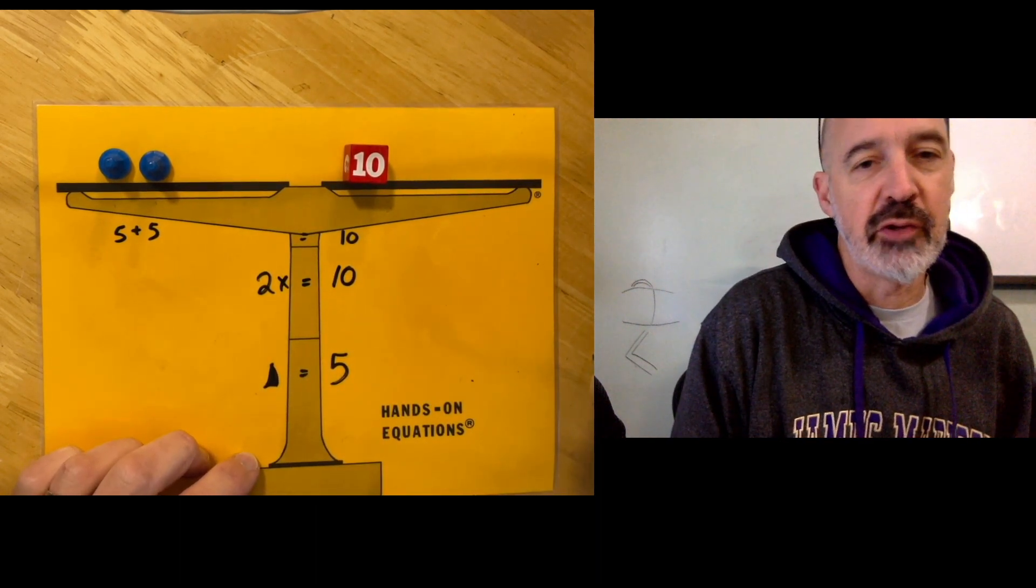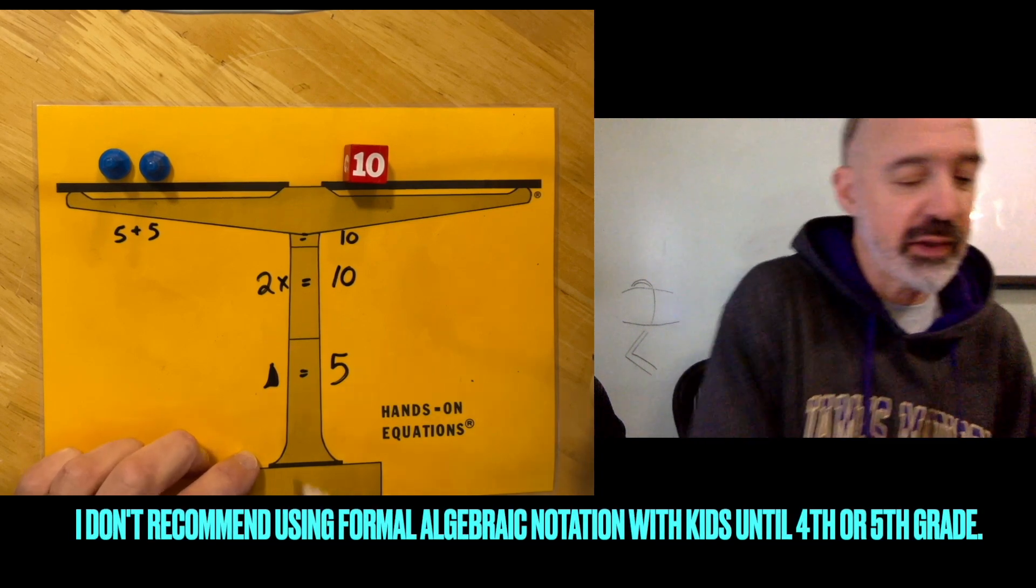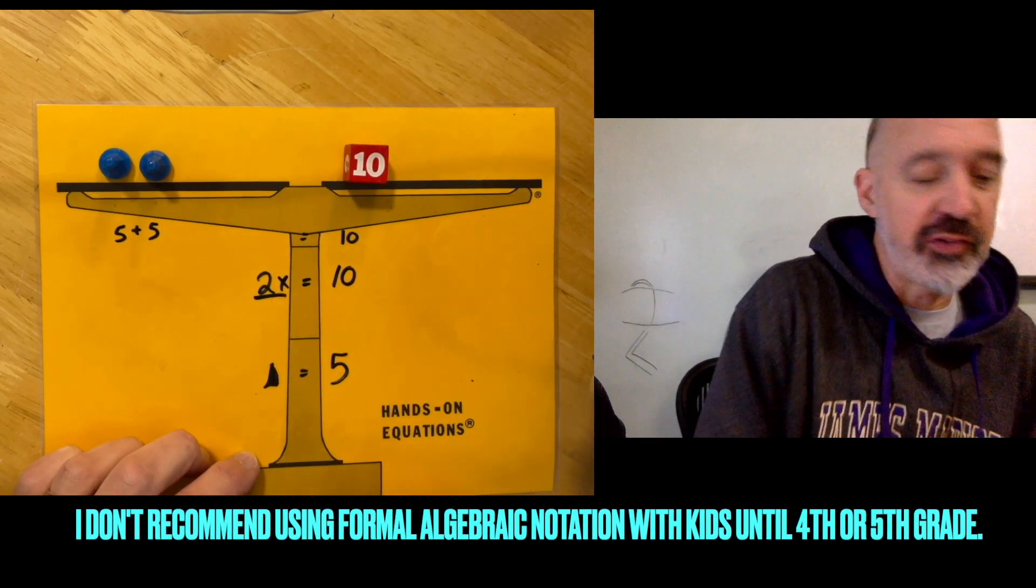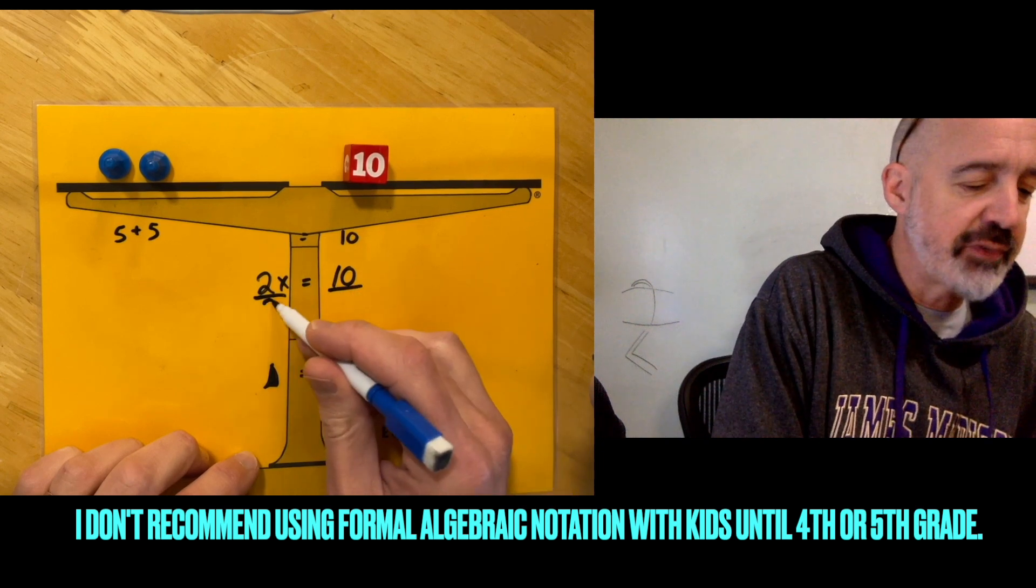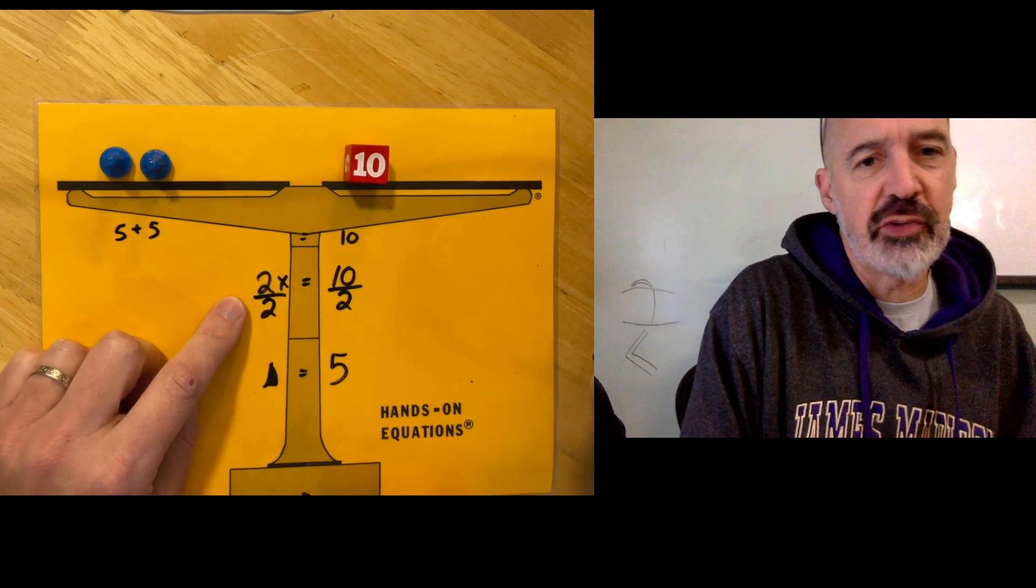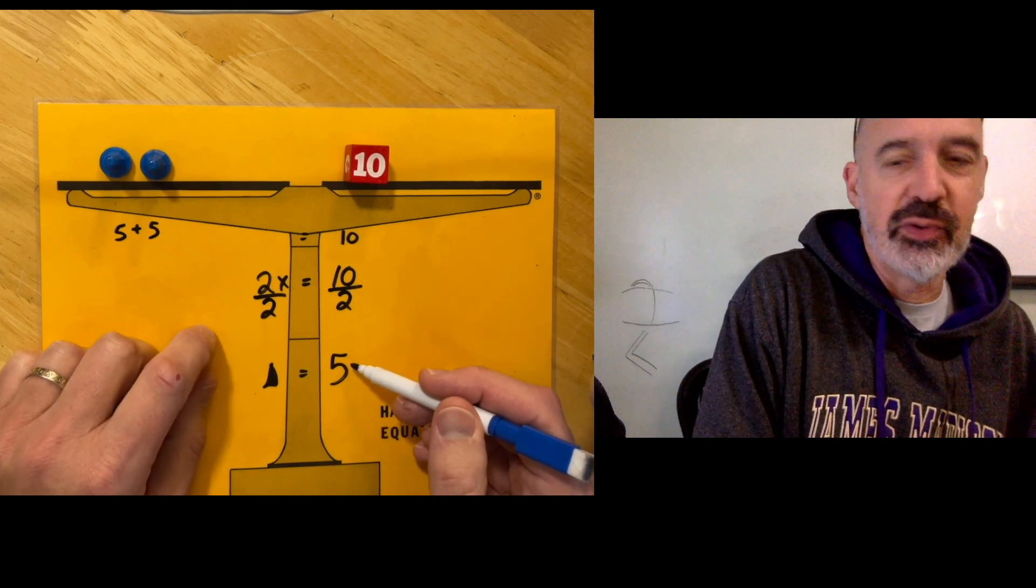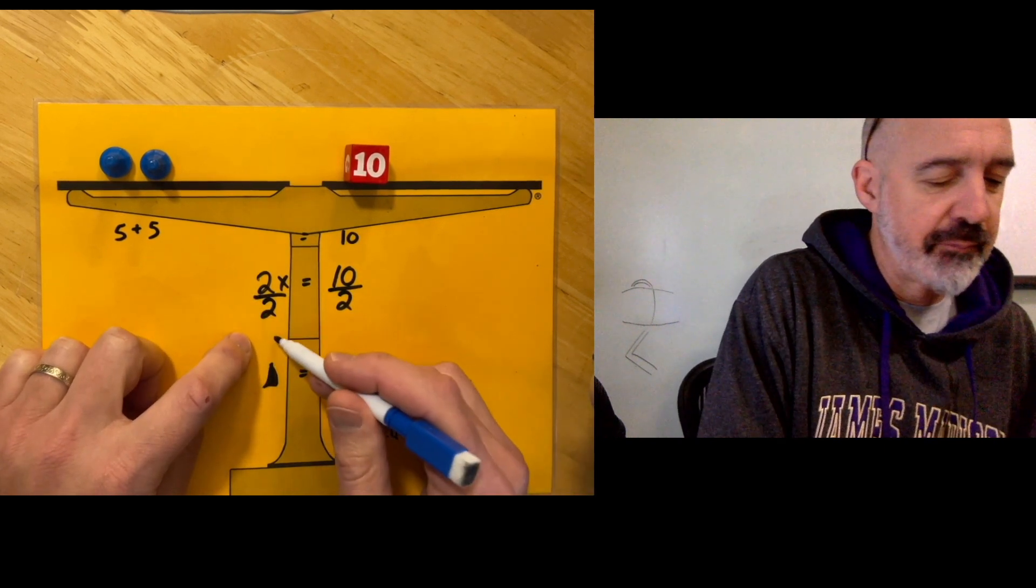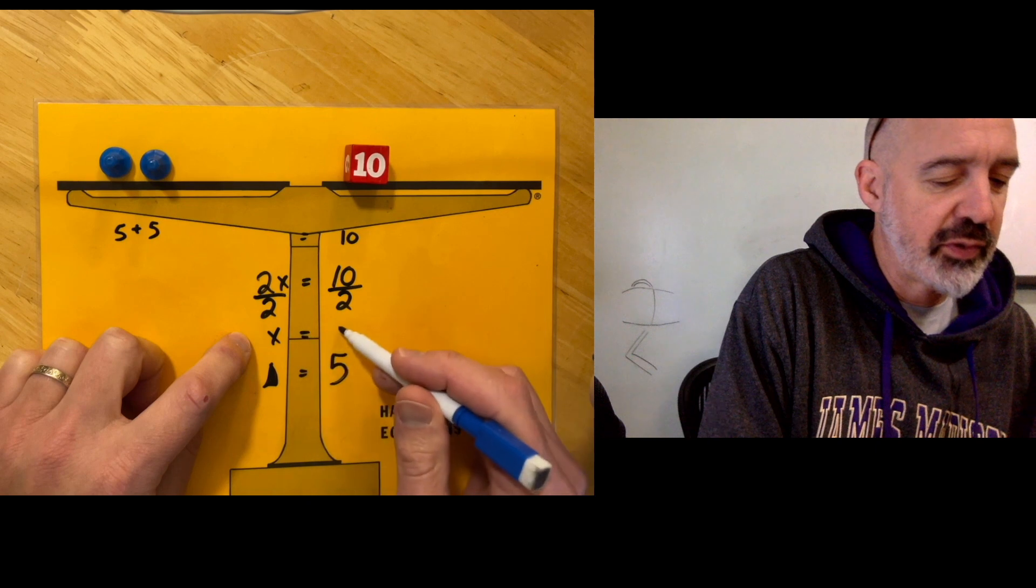And if you're trying to advance your kid very quickly into thinking algebraically and using the correct algebra steps, we would show a fraction bar as division, dividing both sides by 2. 2 divided by 2 is 1, 10 divided by 2 is 5. So you're left with 1x which equals 5.